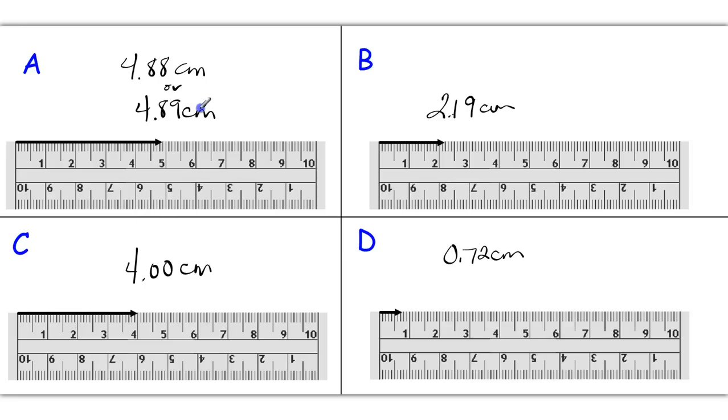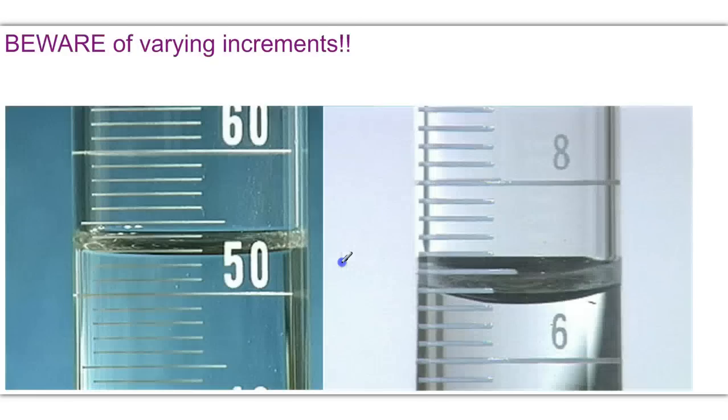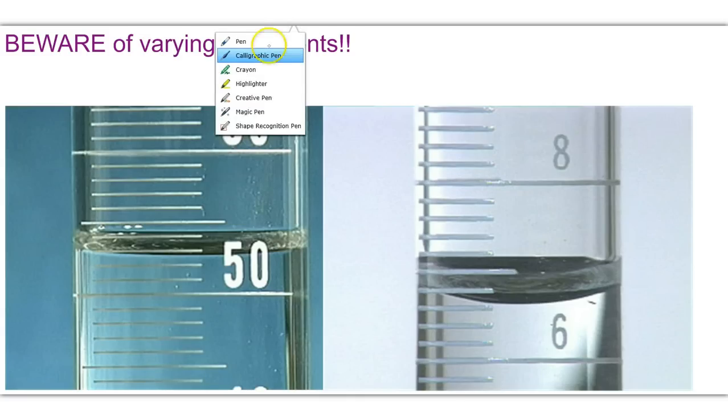So all of these measurements at a minimum had two decimal places because that's how far we could know for certain and estimate with these rulers in particular. Other measuring tools can have a varying amount of increments, therefore a different amount of significant figures.